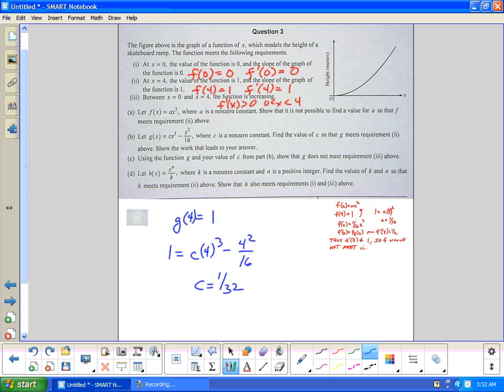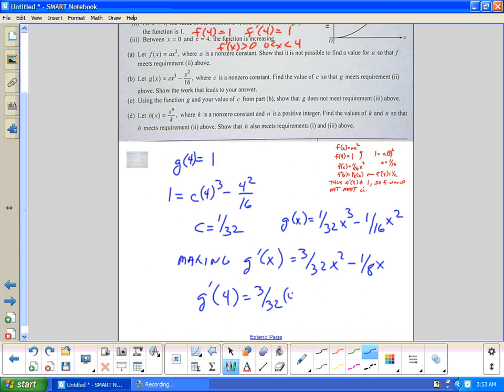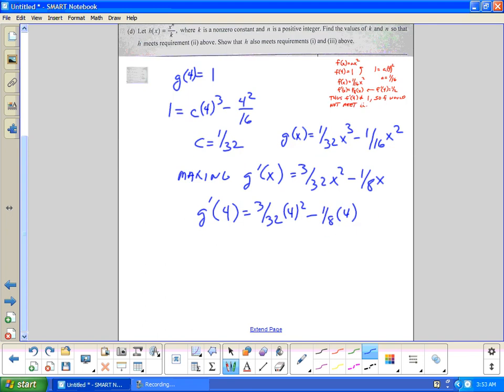That's just algebra. So that means that g(x) would equal (1/32)x³ minus (1/16)x², making g'(x) equal (3/32)x² minus (1/8)x. And if we plug in four, I get (3/32) times four squared minus one-eighth of four. If I do this math, I get g'(4) is three-halves minus one-half, g'(4) equals one.